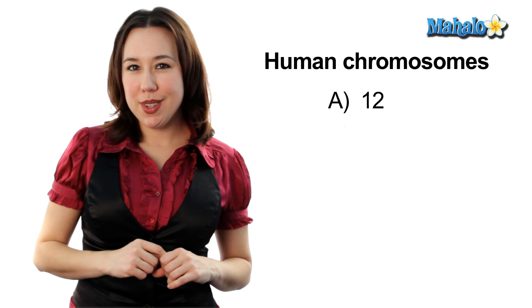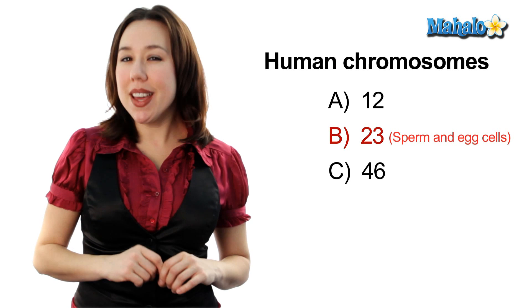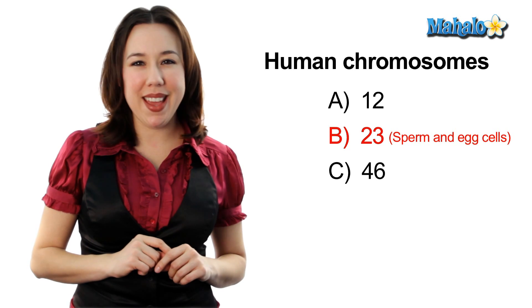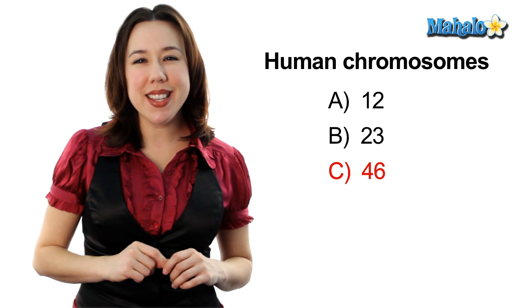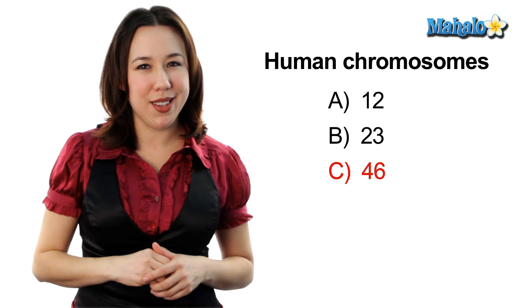Can you guess how many chromosomes humans have? 12, 23, or 46? Well, if you guessed 23, you would be right for the number of chromosomes found in sperm and egg. But if you guessed 46, you'd also be right for the total number of chromosomes found in all of the other body cells.